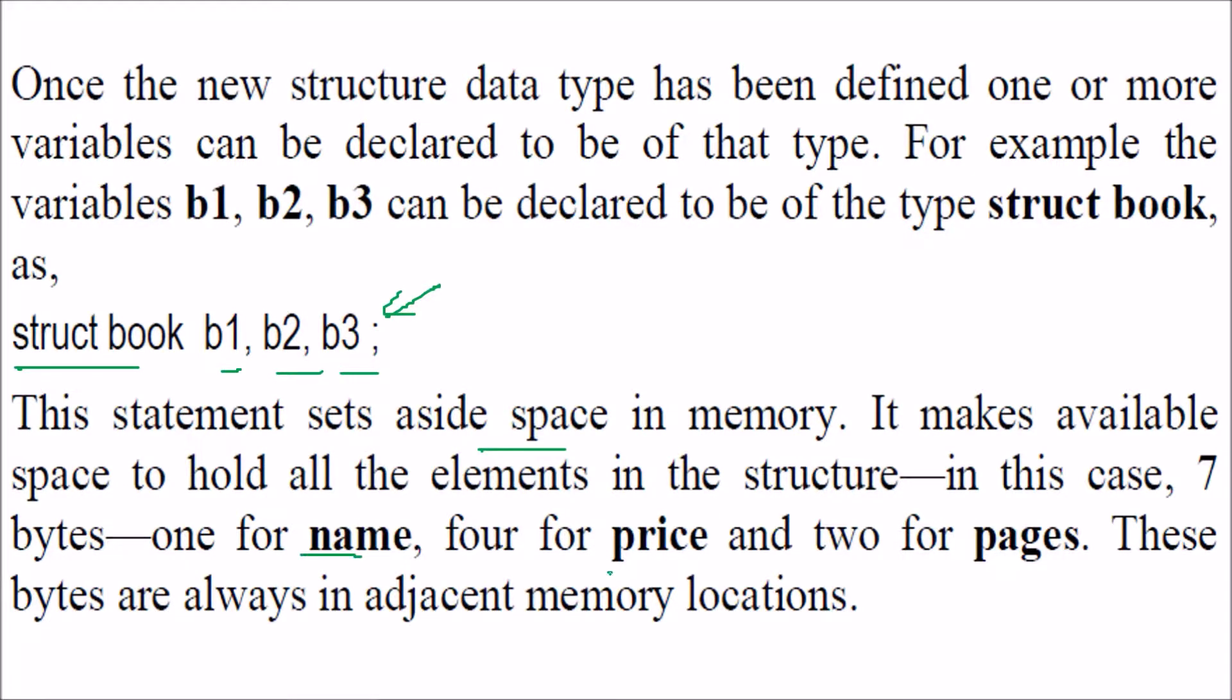We have name, price, and pages. How much or how long the size will be? The name is a character we have taken, so it will take one byte. Price, because it is a float, will take four bytes. Pages is an integer, then two bytes.